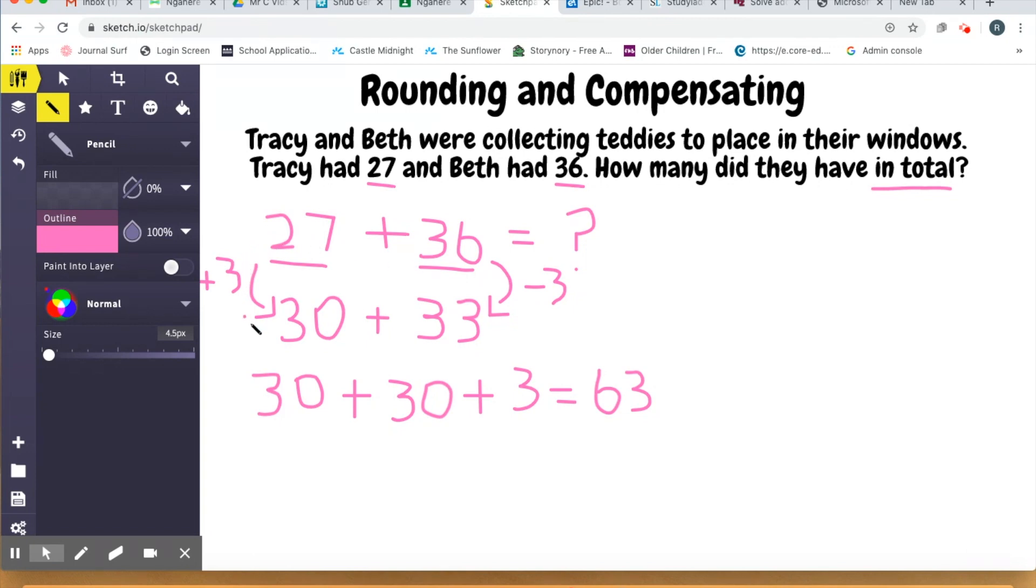So when I round this number up to 30, I add 3, I need to take away that 3 from the other side. So my 27 by adding 3 becomes 30 and my 36 by taking away 3 becomes 33. Now I have two numbers that are much easier to work with and I can just do my 30 plus my 30 plus my 3 gives me my final answer of 63. Pretty straightforward. I'm taking this number, turning it into a tidy number, making sure I'm keeping the total number of objects the same. 30 plus 33, 30 plus 30 plus 3 makes my total of 63.